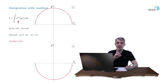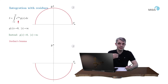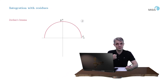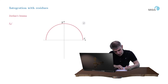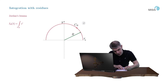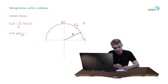Jordan's Lemma is formulated for two types of integrals: the integral along the upper semicircle with positive lambdas, and the integral along the lower semicircle for negative lambdas. We will formulate and prove it for the upper semicircle case; the lower semicircle statement is completely symmetric and the proof will be your homework exercise. The formulation is as follows: suppose we have an integral along the upper semicircle of radius r tending to plus infinity, of the form e to iλz times g of z dz. If lambda is positive and g of z tends to zero uniformly with respect to its argument as r tends to infinity, then the whole integral tends to zero.